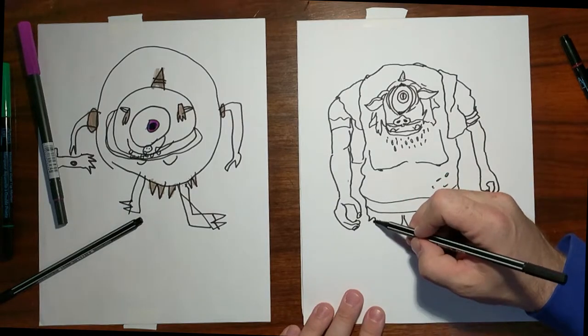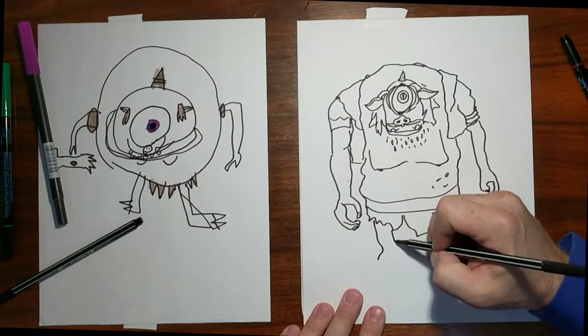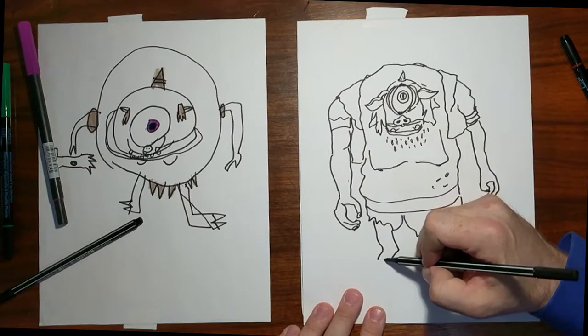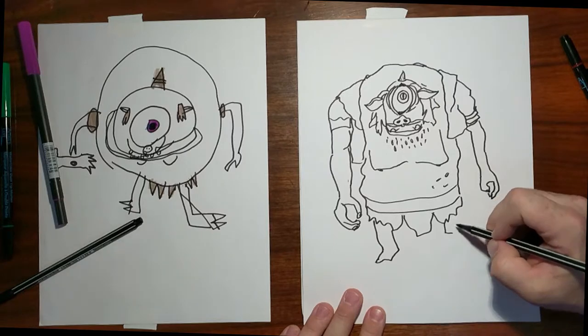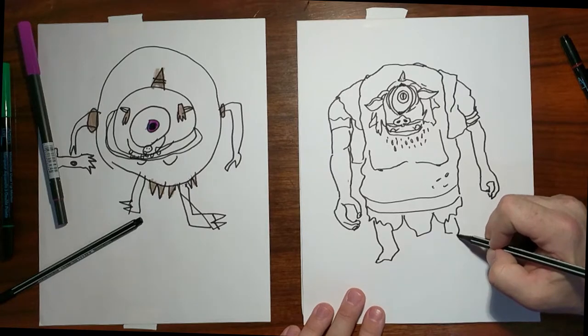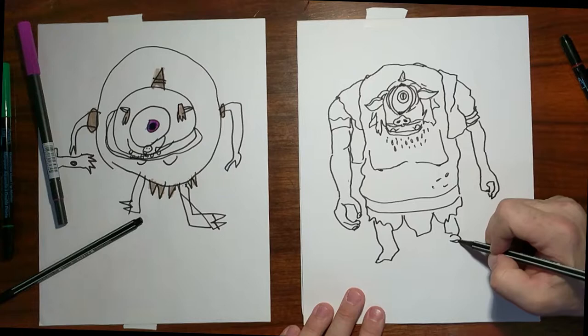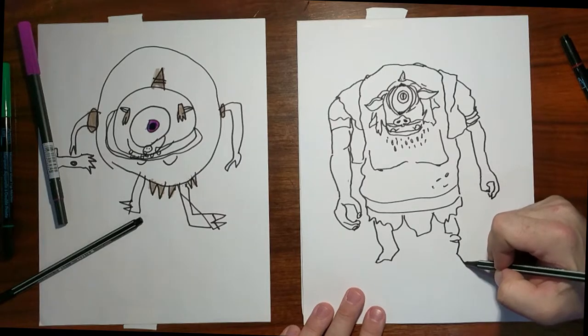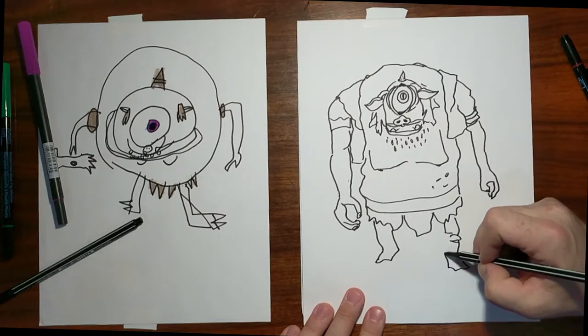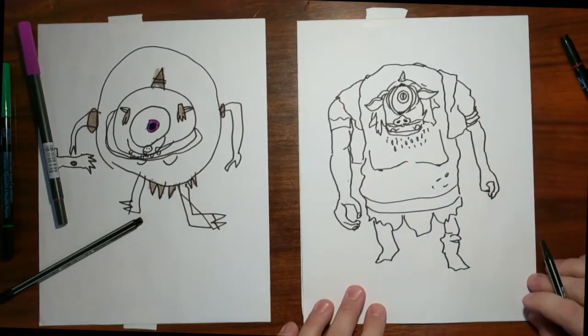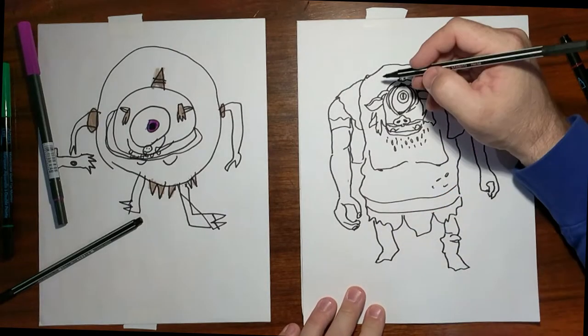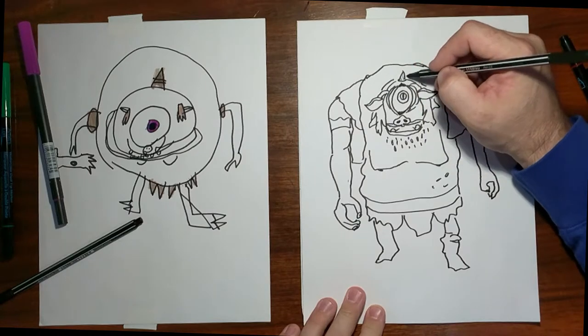All right. Into the legs. And this guy definitely has what I would consider to be, while they are muscular, while they be very muscular on a human, these legs are very undersized for a guy this big. Which makes me think that he doesn't run very fast. A few more details here.